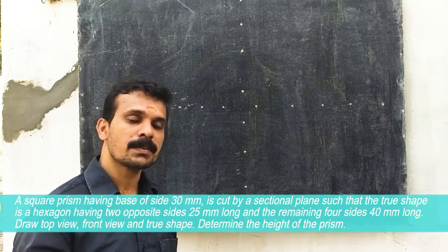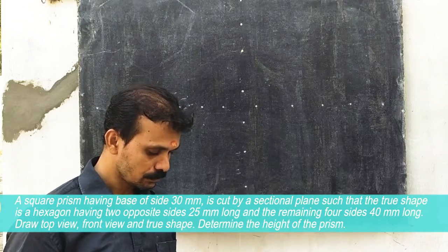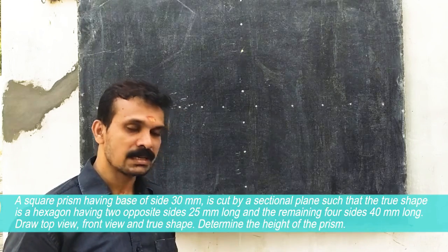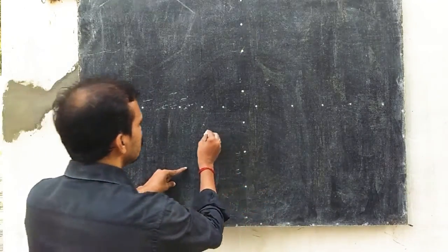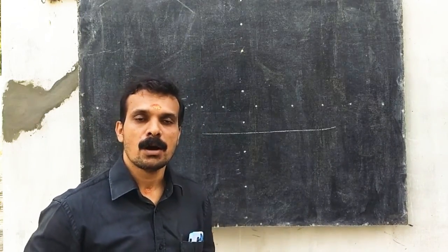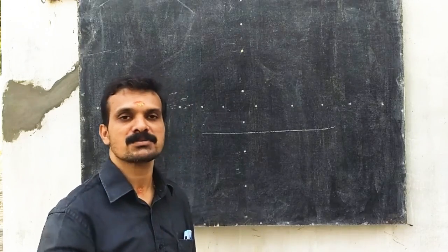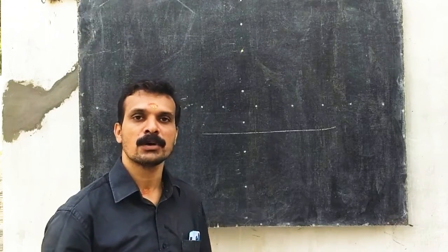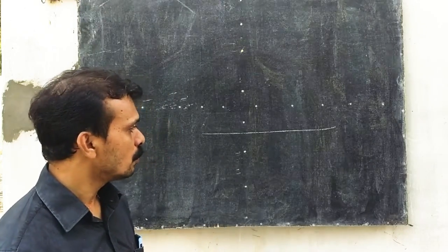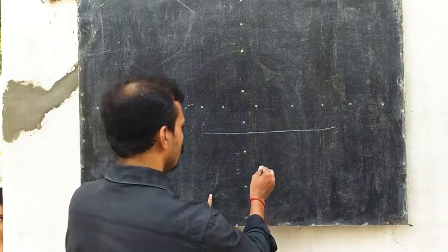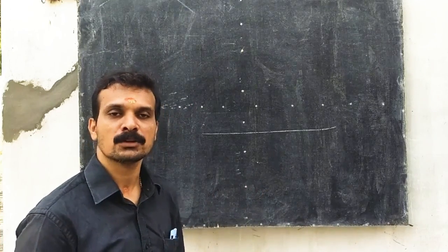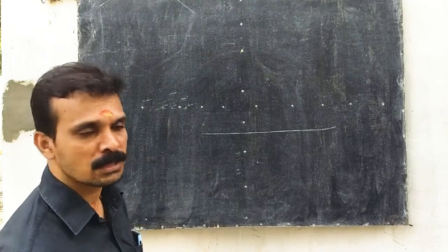A square prism having a base of side 30 mm is cut by a section plane. As seen in the previous question, for obtaining a hexagon from a square prism, the prism should be placed on the ground equally inclined to VP so that in the top view we can see it as a diamond. In the top view, we draw it using the length of the diagonal — since the side is 30, the diagonal is 30√2, and half of that is 15√2.